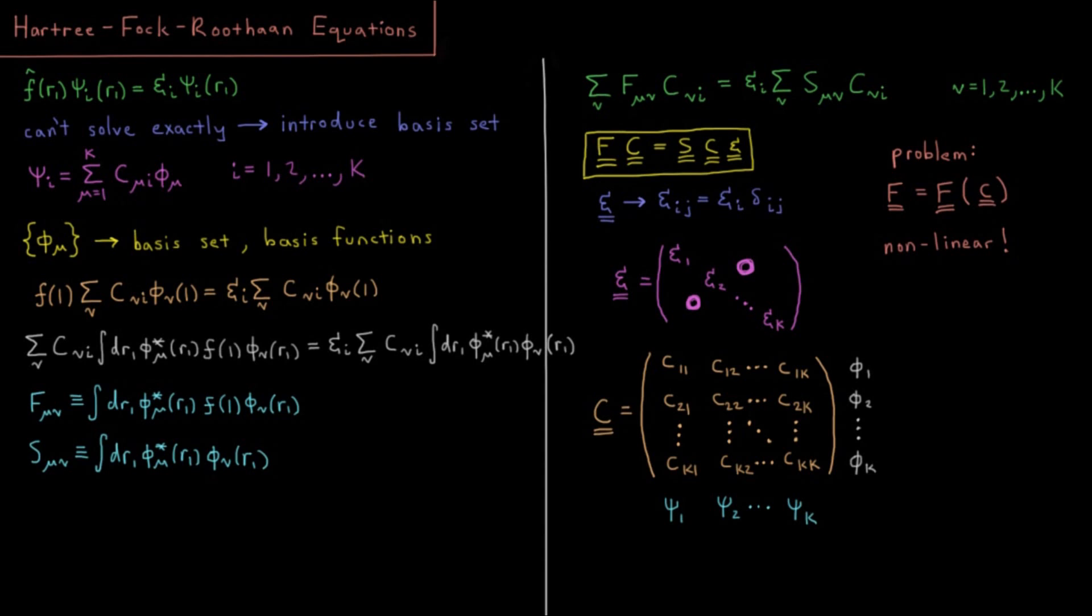This video will discuss the Hartree-Fock-Roothaan equations for solving Hartree-Fock using a basis set. Up until this point we've gotten ourselves to a nice simple expression for the restricted Hartree-Fock equations where we have our Fock operator as a function of the spatial variables of electron 1 acting on some spatial orbital psi i, giving us the orbital energy epsilon i times the same spatial orbital psi i.